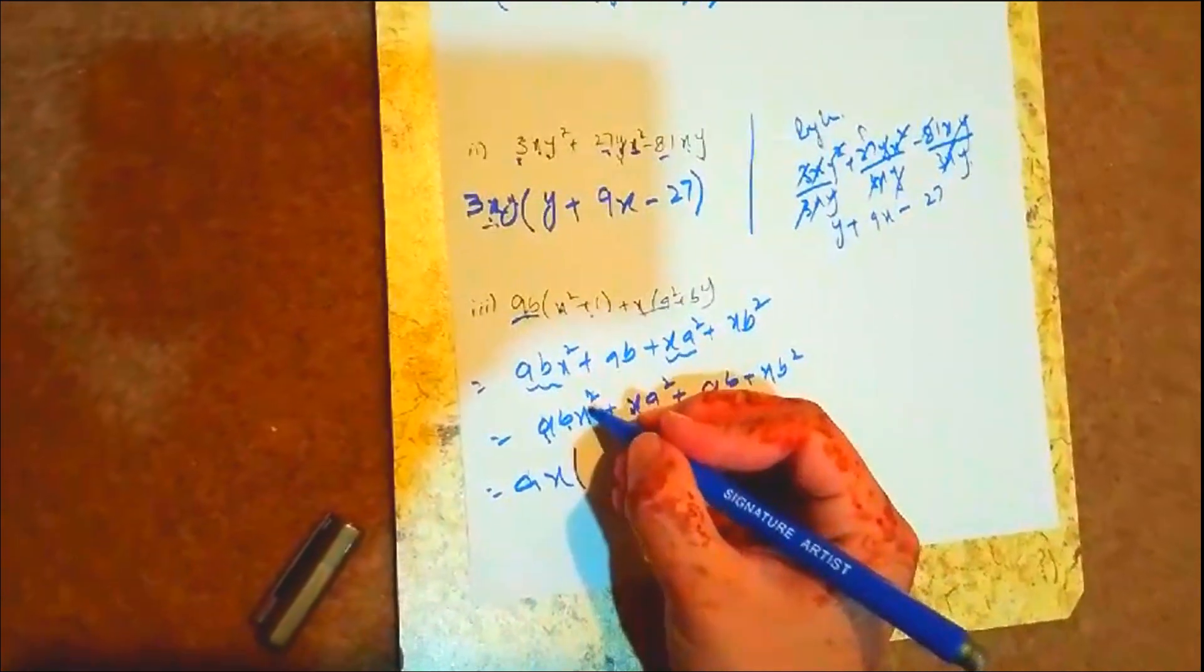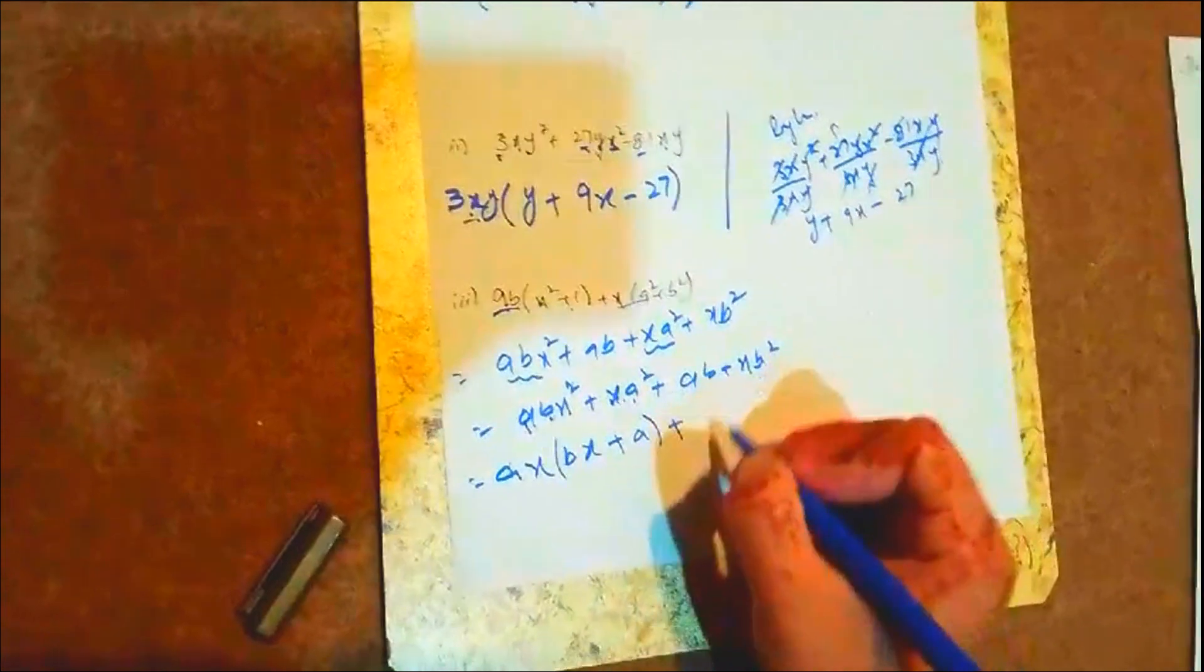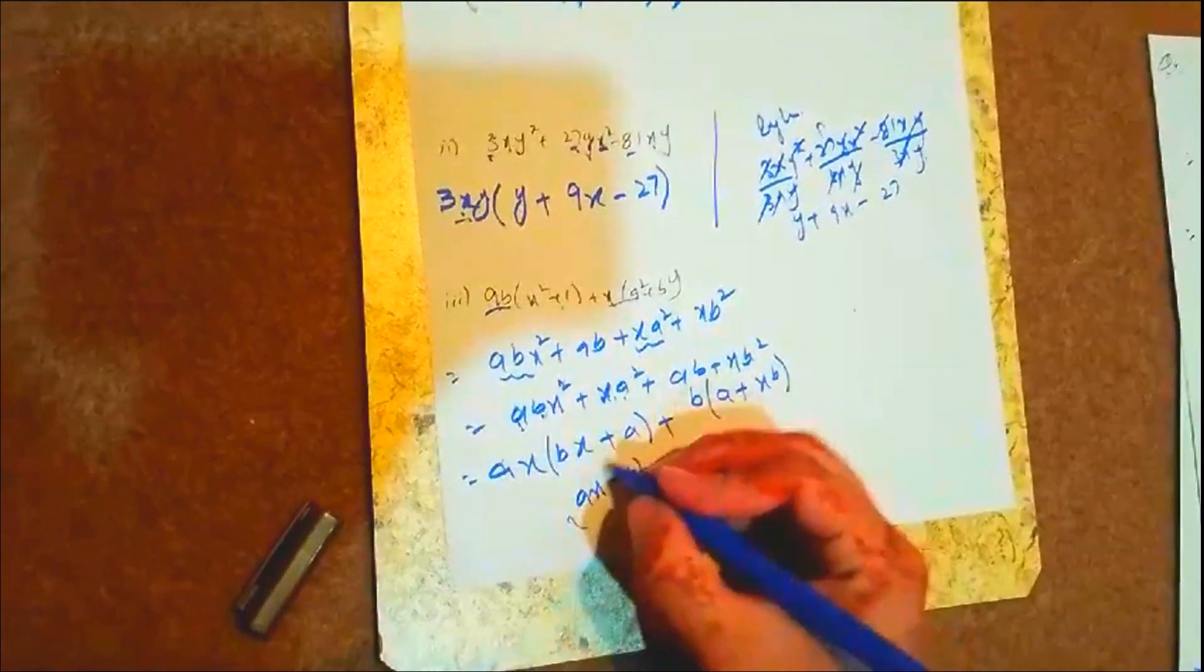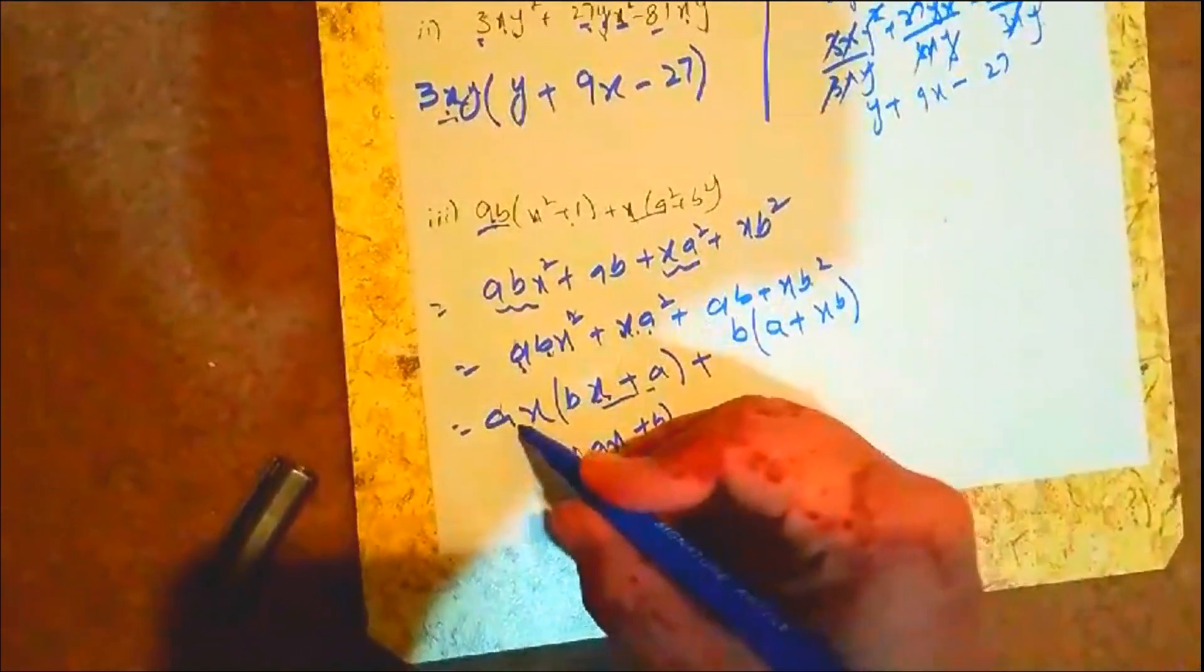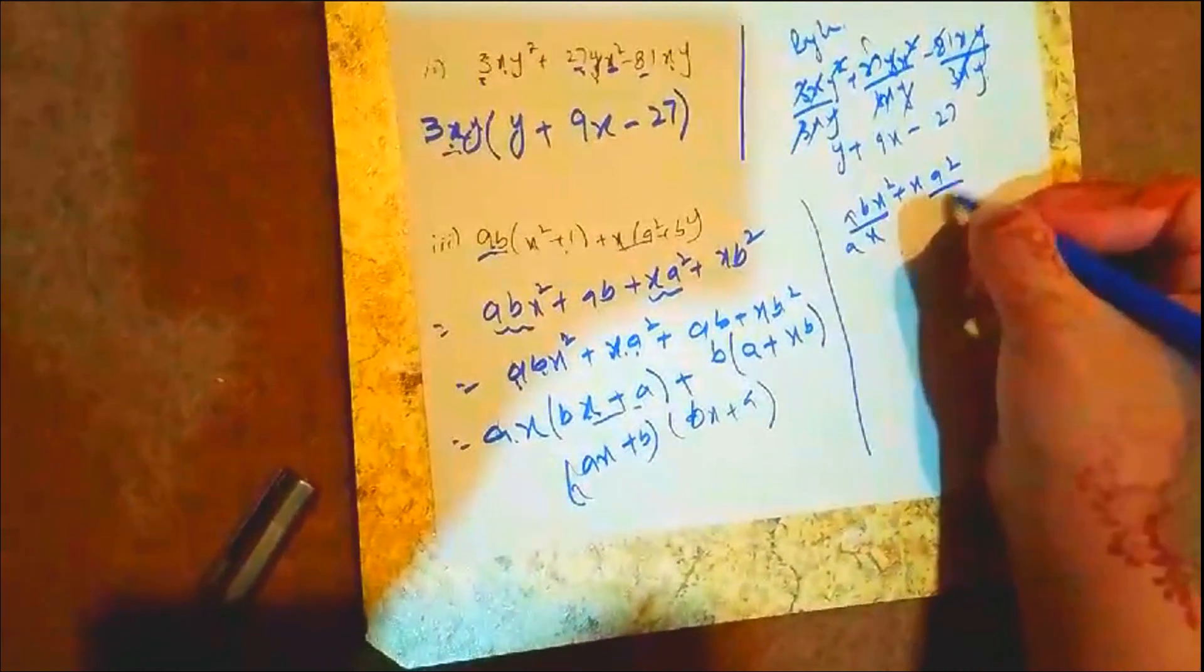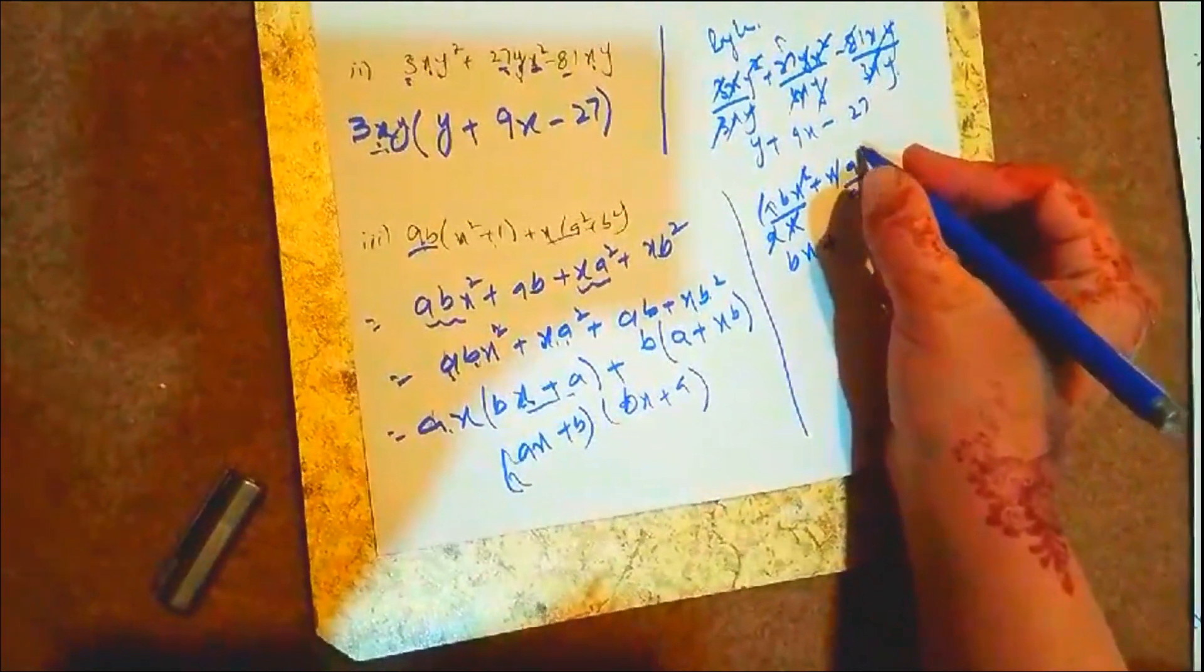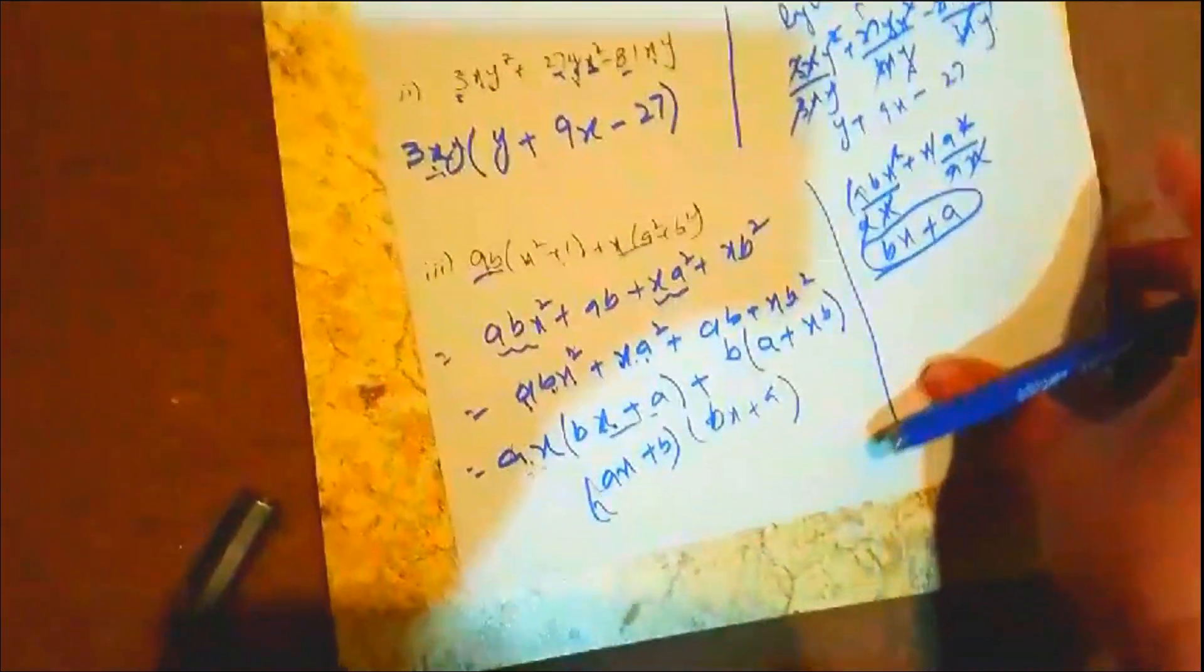Taking common factors: a(bx² + a) and b(a + x). We get ax(bx + a) + b(a + xb). These two are the same pattern, so the final answer is (a + b)(ax + b). If you don't understand, you can do it step by step. This is a short trick so you can easily understand.